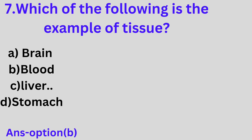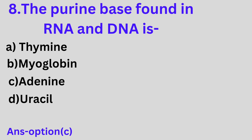Question 7: Which of the following is an example of tissue? A. Brain, B. Blood, C. Liver, D. Stomach. Option B is the correct answer. Blood is an example of tissue.